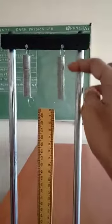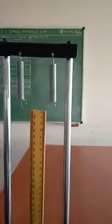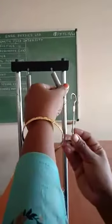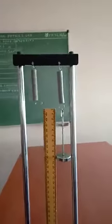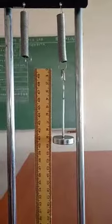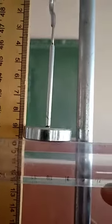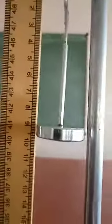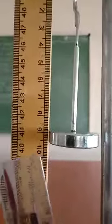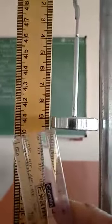This is spring 1, for which we are going to determine the spring constant, and this is spring 2. Attach the 50 gram weight hanger to spring 1 and observe the amount of displacement. To take readings, place the graduated scale and measure the reading here. The reading is taken as 9.5 centimeters. Readings should be taken without any parallax error.